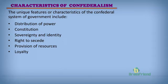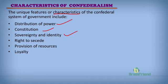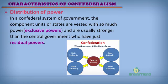Having looked at the definition of confederalism, let us look at the characteristics or features of the confederal system of government. There are certain things that will characterize a society or country as one practicing confederalism. These include: distribution of power, the constitution, sovereignty and identity, the right to secede, provision of resources, and loyalty. Let's take a look at them one after the other.